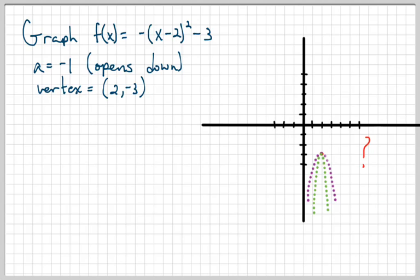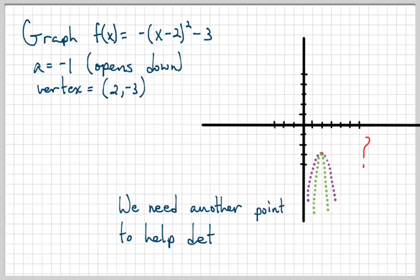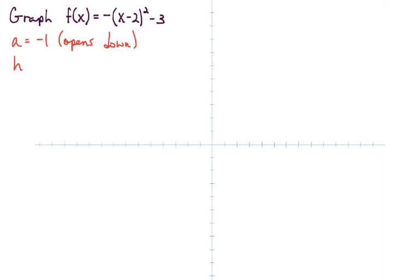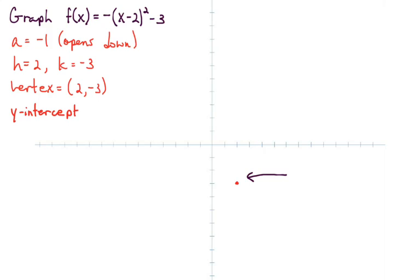The problem now is we don't know how wide the parabola should be — should it be wider like the purple drawing, or skinnier like the green one? We know A is negative 1, so it shouldn't be too skinny; it only gets skinny when the absolute value of A is more than 1. To tell us how wide it should be, we need an additional point on the parabola. We're going to use the y-intercept to help us draw the graph.